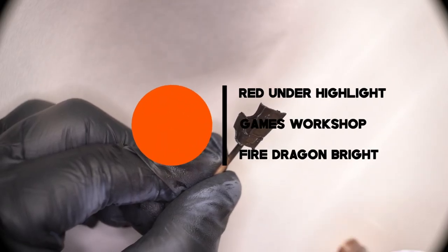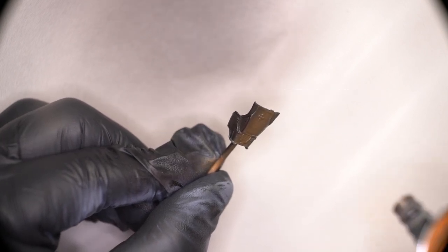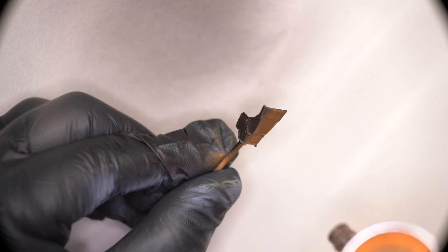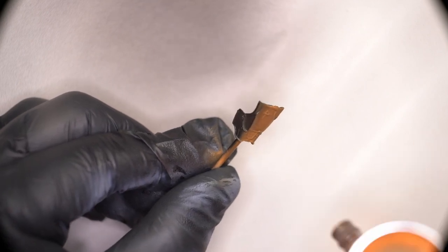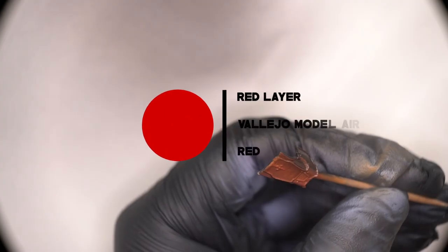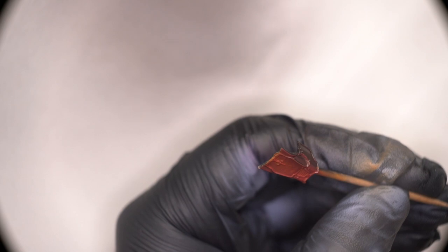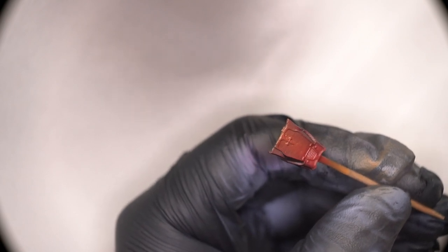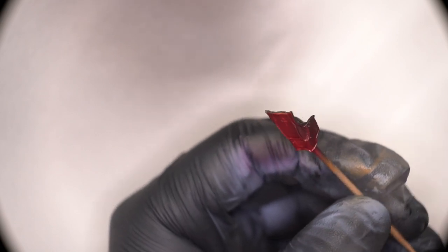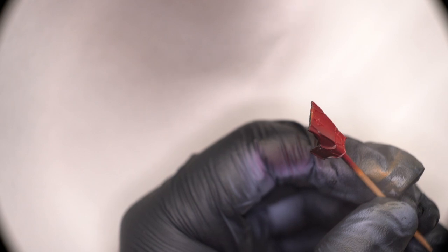When you see the term under highlight, like here for example, what that's referring to is something kind of similar to the zenithal technique, where I'm actually adding a very bright layer that will then be overlaid by a much more transparent layer that's a complementary color to emphasize that additional layer that happens over the top. So for example, if we have a bright orange that's then going to be layered with a red transparency layer, it's going to make that red much more vibrant wherever that orange under highlight has occurred.